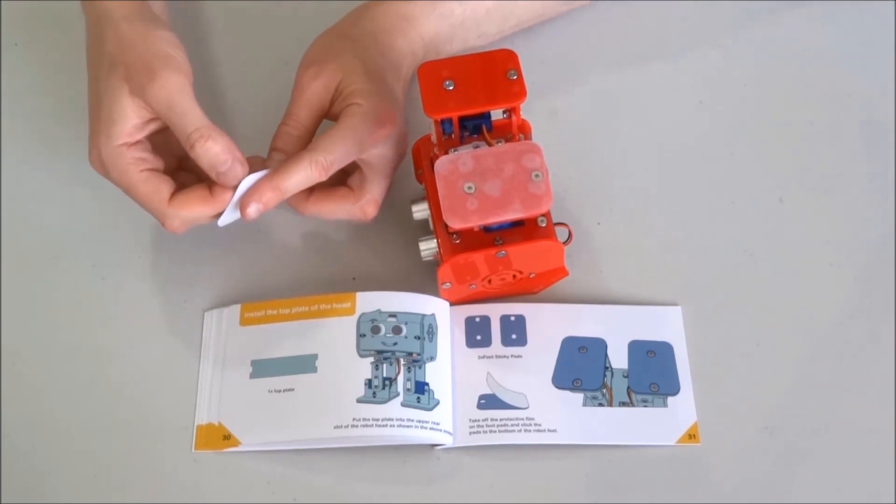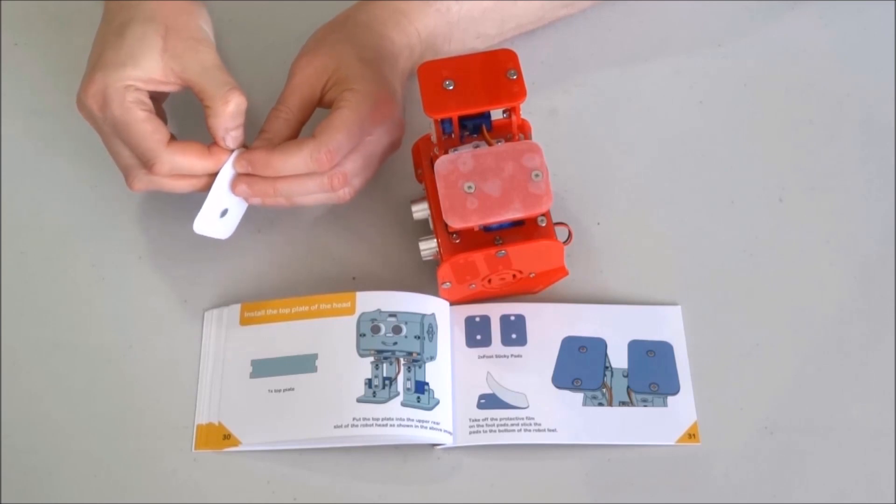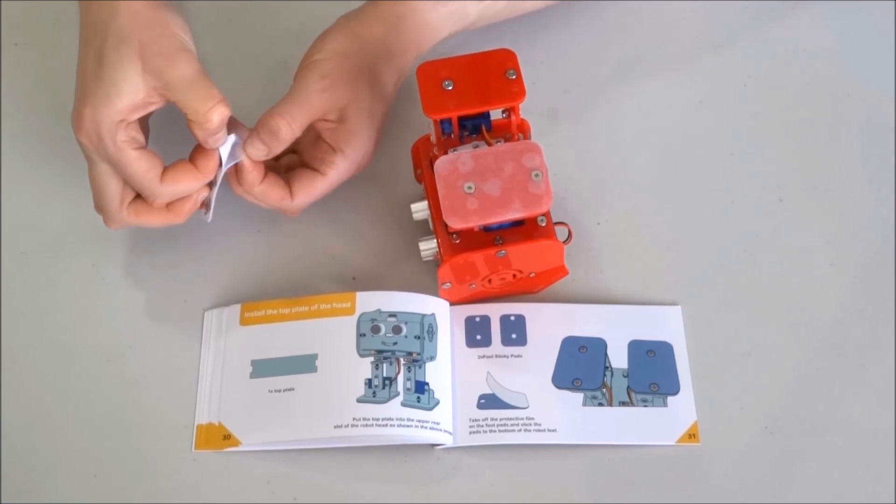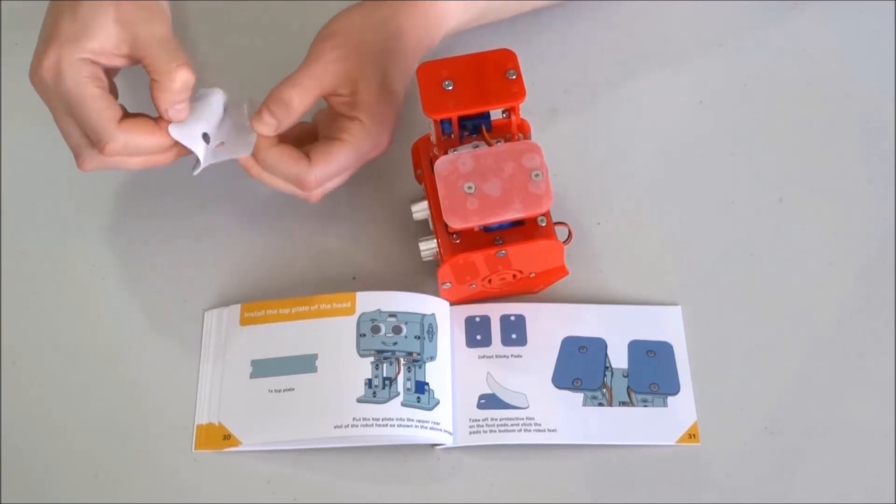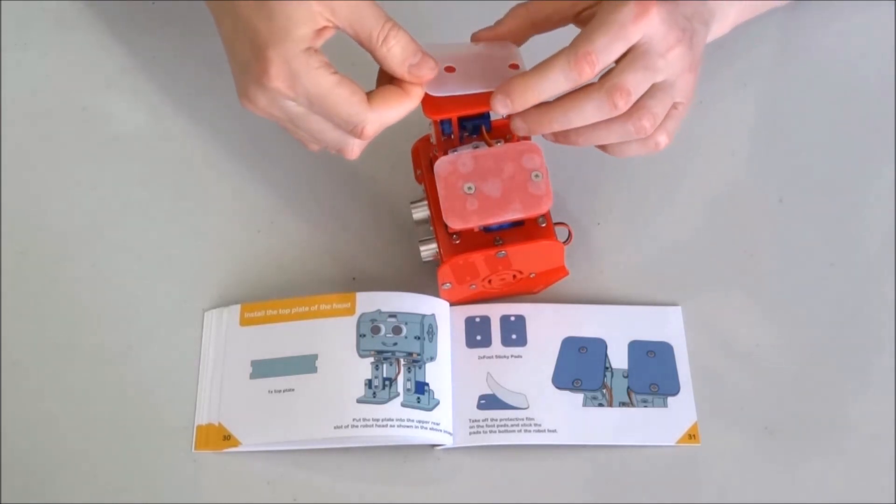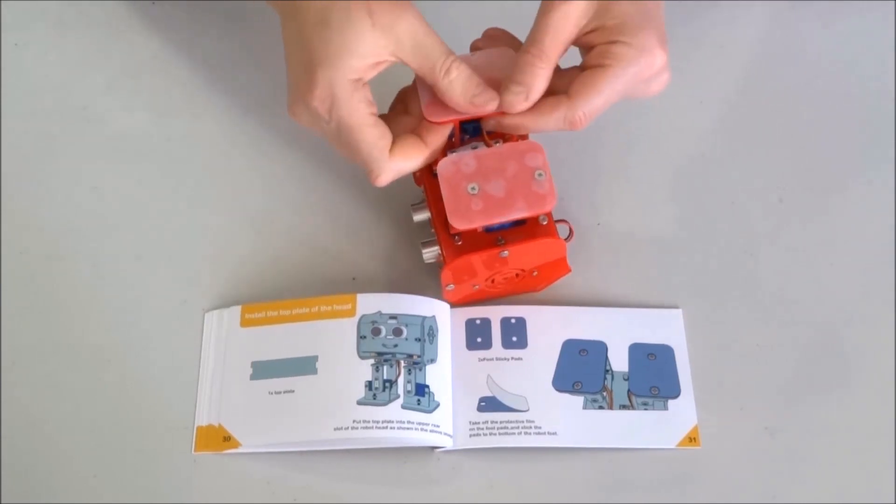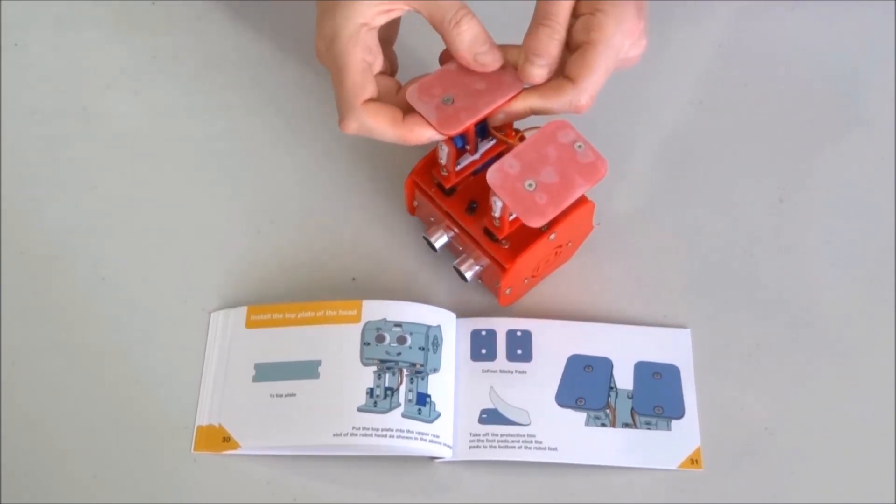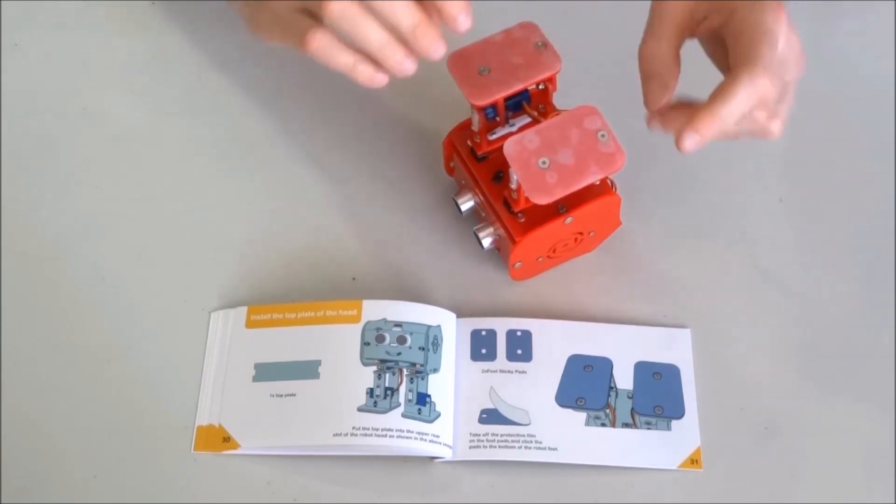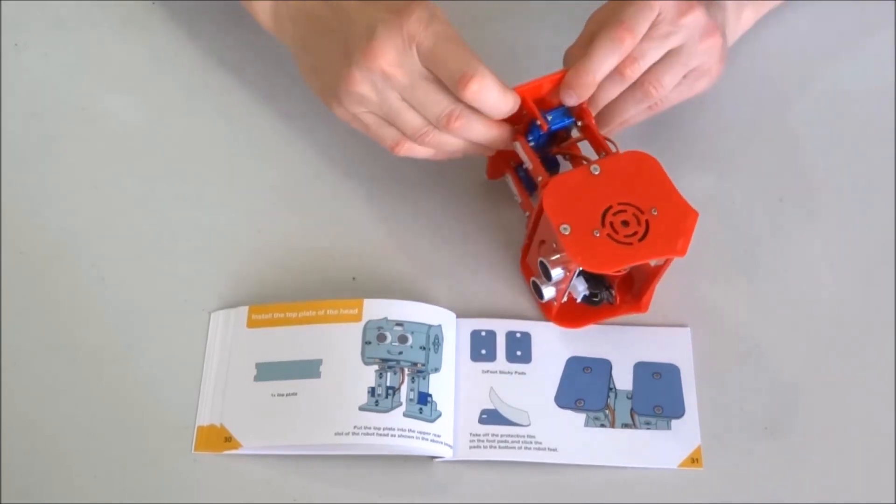Repeat the same procedure with the second foot. Peel off the protective layer to expose the glue. Place the pad over the foot and glue it in place. Now we can press it.